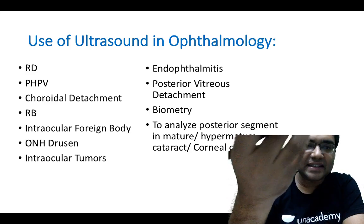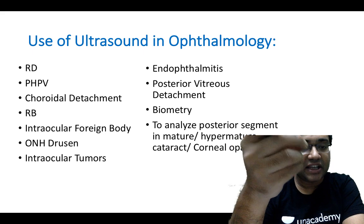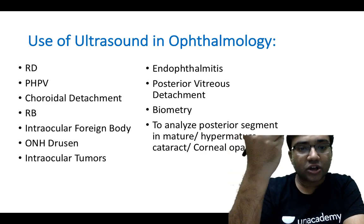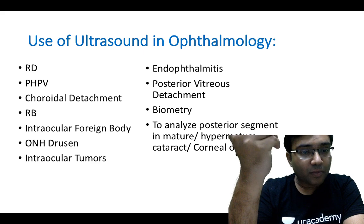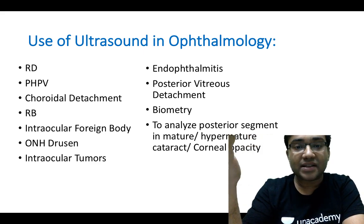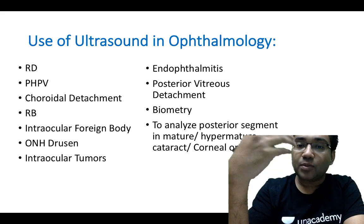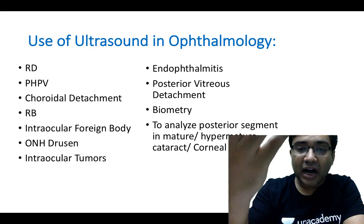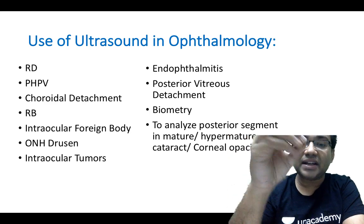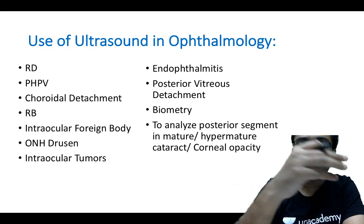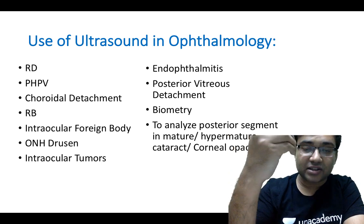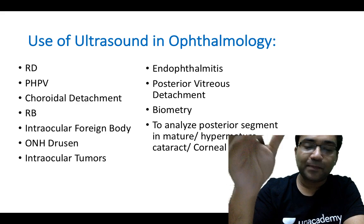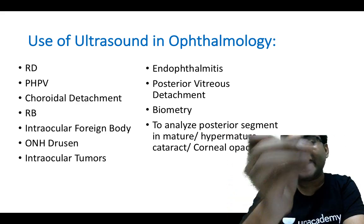The role of ultrasound in ophthalmology covers many diseases: retinopathy of prematurity, retinal detachment, PHPV, choroidal detachment, retinoblastoma, intraocular foreign body, optic nerve drusen, intraocular tumors like uveal melanomas, endophthalmitis, posterior vitreous detachment, vitreous hemorrhage, and biometry for IOL power calculation. It is also used to analyze the posterior segment in patients with mature or hypermature cataract or corneal opacity. Both B-scan and A-scan are used, and many machines have both.